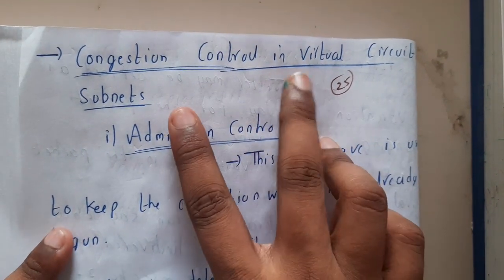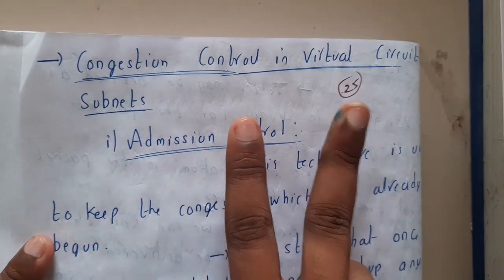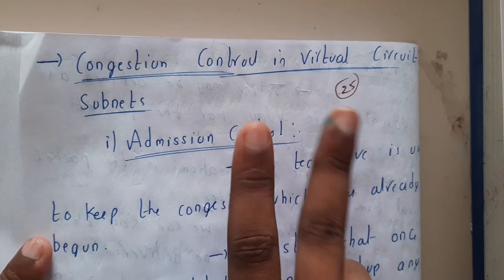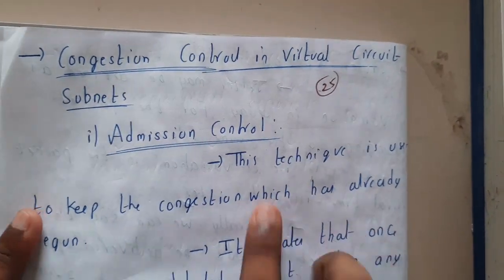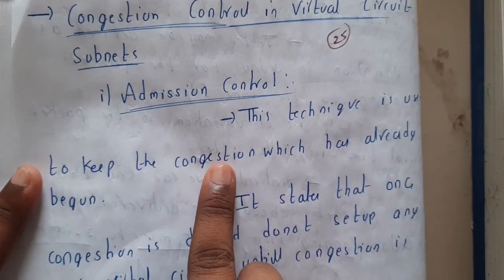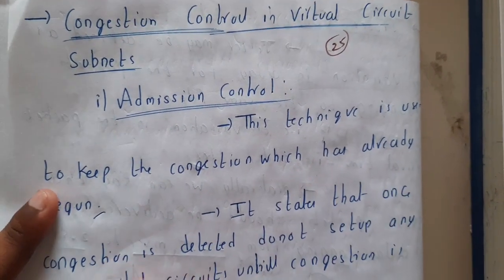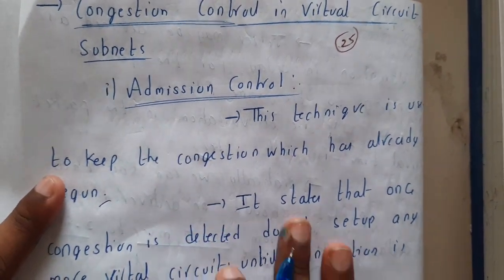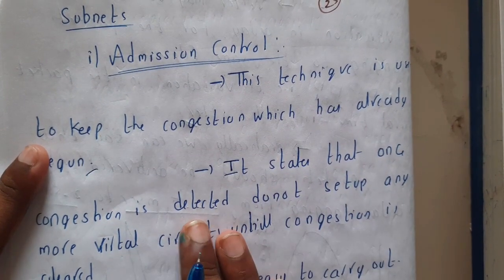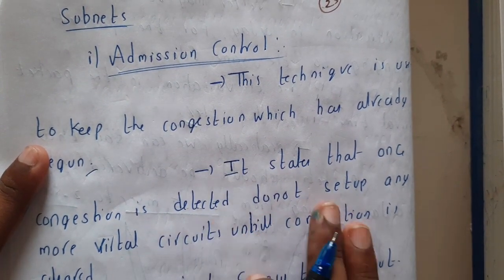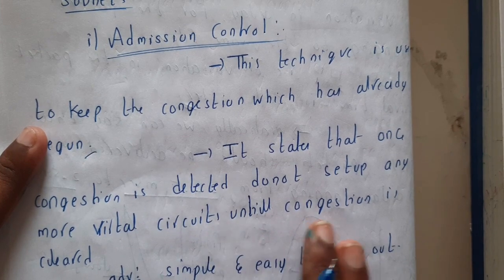To do congestion control, we will be following two principles — two alternative methods. One is admission control. This technique is used to keep the congestion which has already begun under control. It states that once congestion is detected, do not set up any more virtual connections until the congestion is cleared.